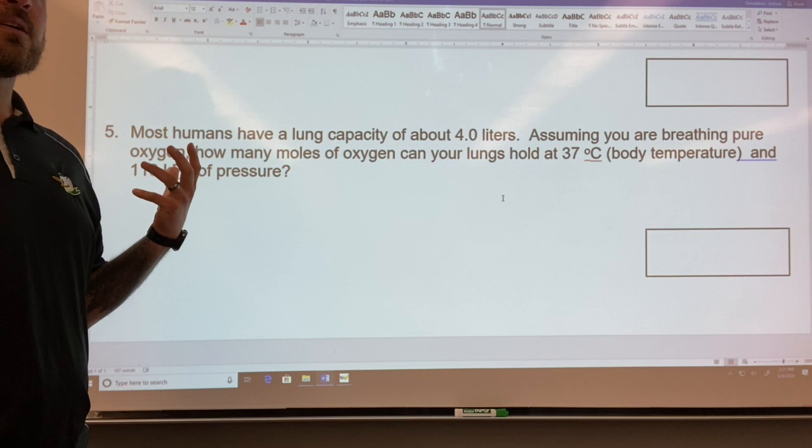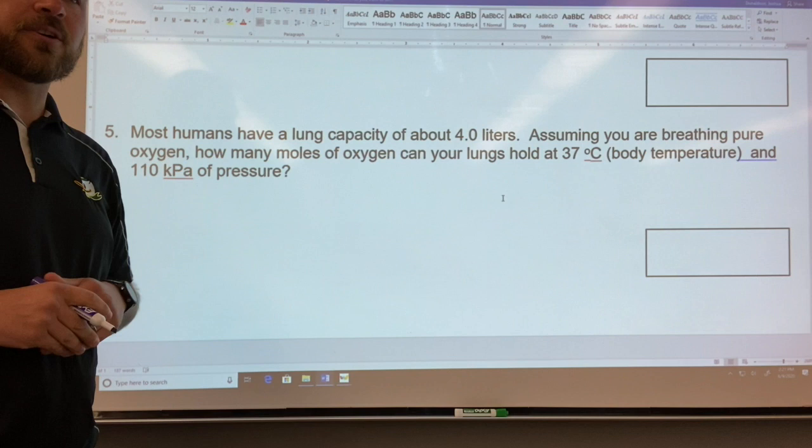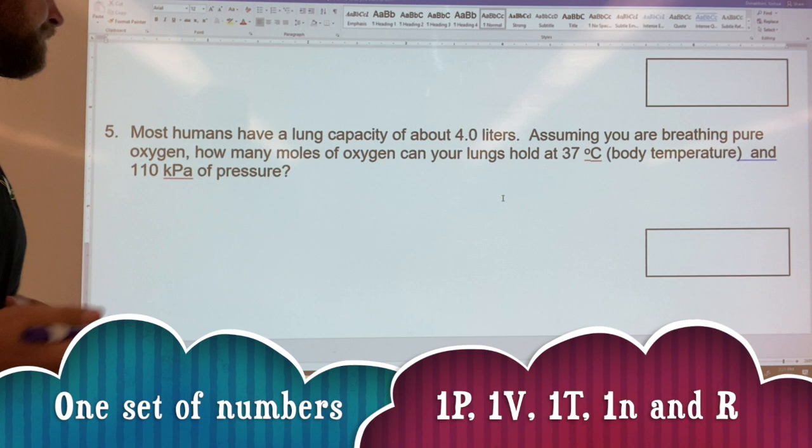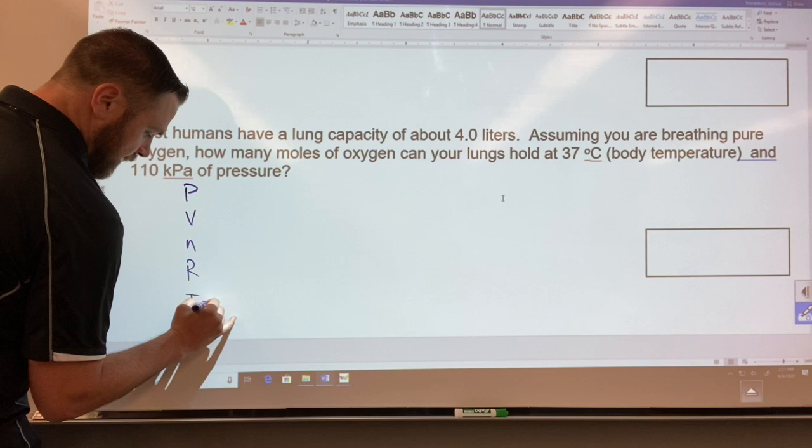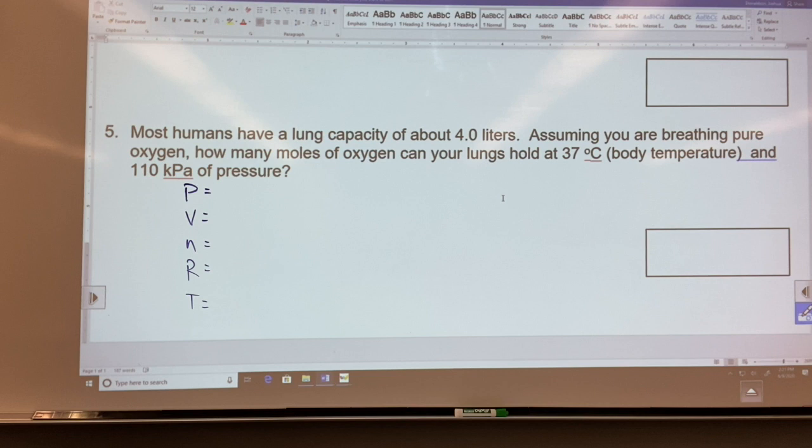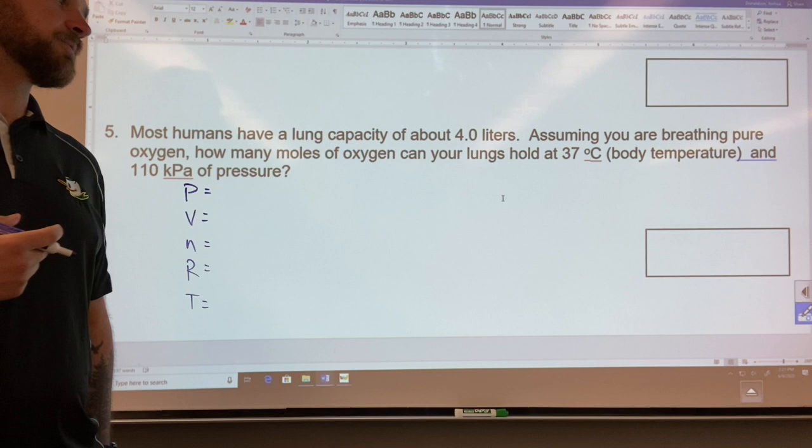In order to solve a question like this, unlike the other equations which had beginning and ends, these just have one. So one pressure, one volume, so we have PV=nRT. We need to get all of these variables. Now there's a couple ways to do this, and there's a couple units we have to pay very close attention to.